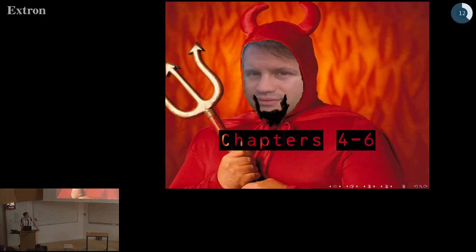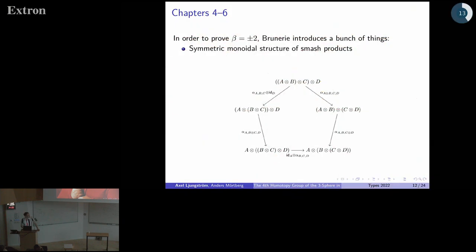In fact, this is what leads us to chapters four to six of Guillaume's thesis, which is coherence hell. You know, this is hell, and he's ended up in coherence hell. And why is this? Well, in order to prove that this beta is plus or minus two, you need a bunch of things. The first thing you're going to need is smash products.